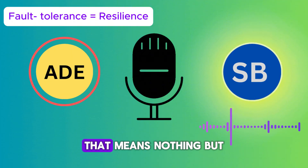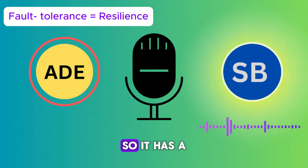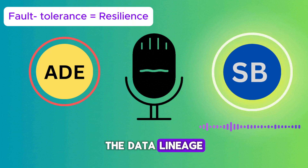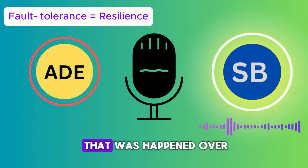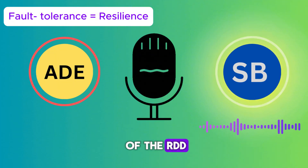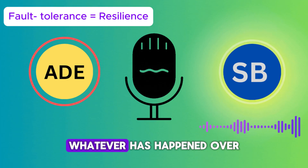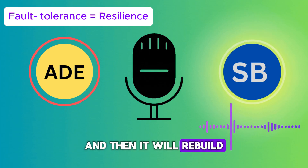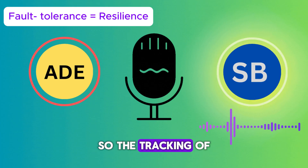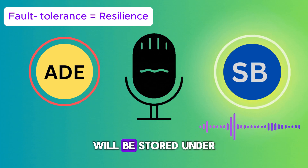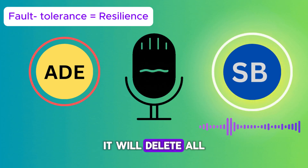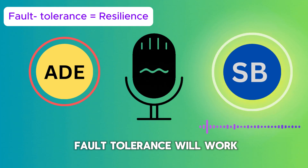RDD is fault tolerant, which is the same as resilience. This is achieved by tracking the data lineage — a record of all changes that happened to an RDD. If a particular RDD partition is lost, Spark goes back to the original source, reapplies the transformations, and recomputes the lost partition. Tracking information is stored in HDFS in a temporary location and is deleted after any shuffling process.